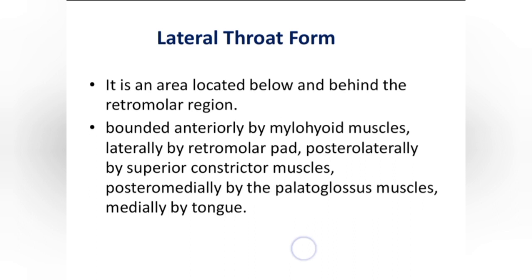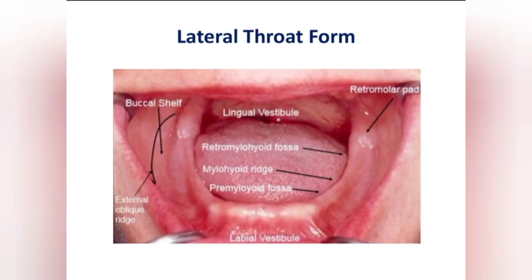We can now see the different landmarks in a completely edentulous mandibular arch — the location of the retromolar pad, lingual vestibule, and retromylohyoid fossa, which is your lateral throat form. Anterior to it is the mylohyoid ridge, and anterior to the mylohyoid ridge is the pre-mylohyoid fossa.